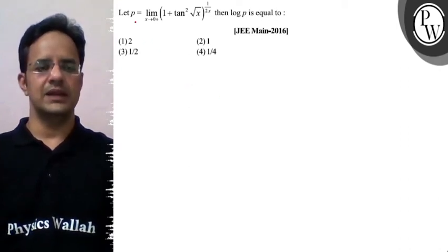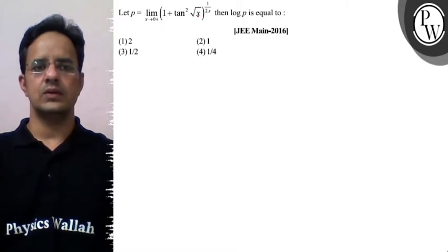Hello bachyo, problem hai ki let p equal to limit x tending to 0 plus 1 plus 10 square root x whole raised to power 1 upon 2x then log p is equal to